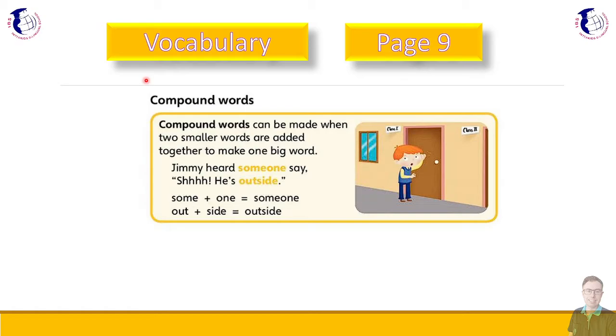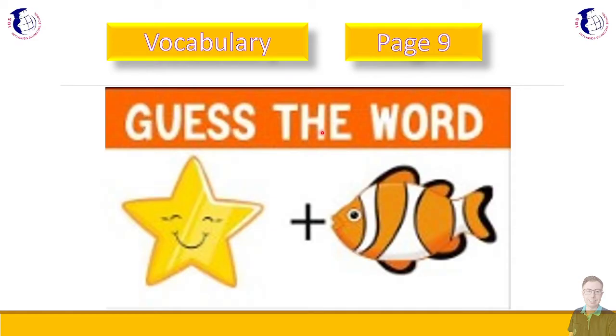Okay, so we have Vocabulary on page 9, and we are doing Compound Words Today. So compound words can be made when two smaller words are added together to make one big word. So an example here, Jimmy heard someone say, shh, he's outside. So these are both single words, but they can be made by putting two smaller words together. So you have some and one, which comes together to make the word someone. Then you have out and side, which comes together to make the word outside.